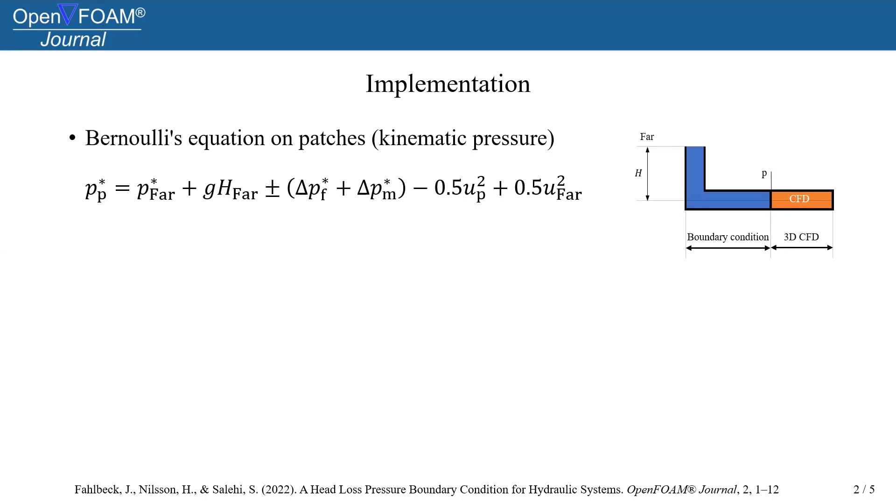The kinematic pressure far in the hydraulic system is added. The minor losses is a function of flow velocity and minor loss coefficient, whereas the friction losses is a function of flow velocity, pipe length and diameter, surface roughness, and a friction loss coefficient.